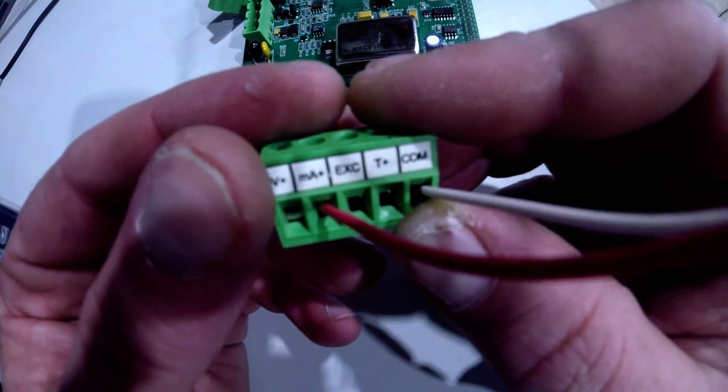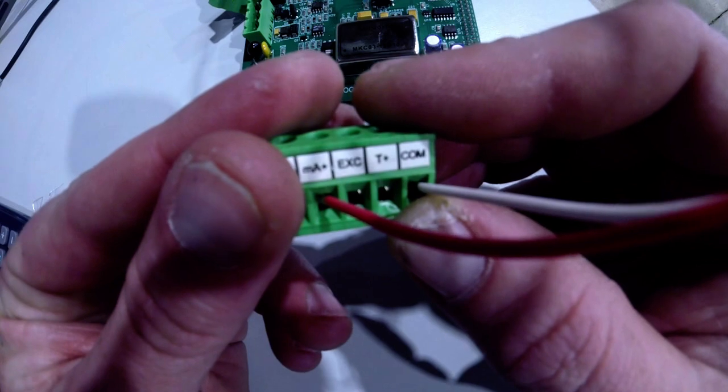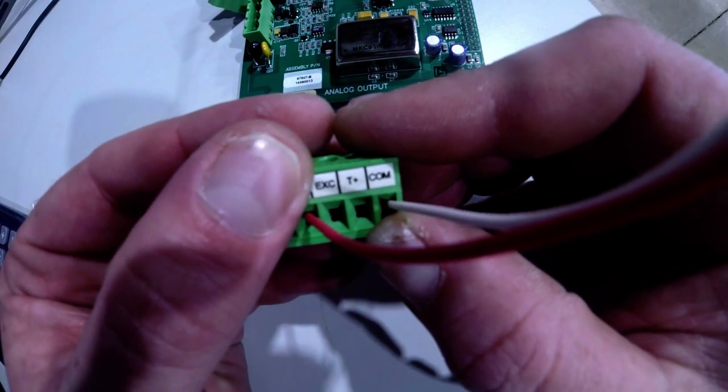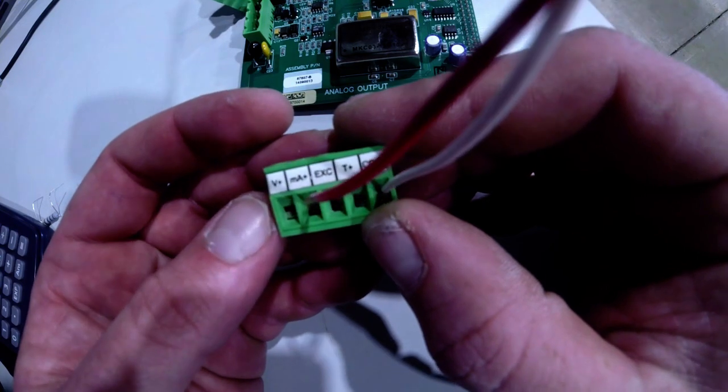Milliamp plus if we were using a 4 to 20 or 0 to 20 milliamp output. We have excitation plus and then we have T plus, that's if we were using temperature or something else with a different signal.